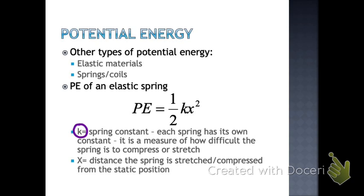Even though k is called a spring constant, it's a little misleading because it's not truly a constant value. The spring constant depends on the individual spring being examined — it's individualized. Each spring has its own value of k, and it measures essentially how stiff the spring is — how difficult it is to stretch or compress. A low spring constant means the spring is lightweight and very easy to stretch or compress.